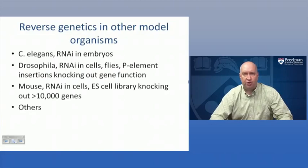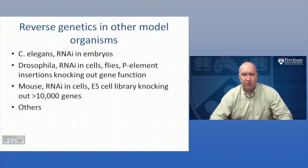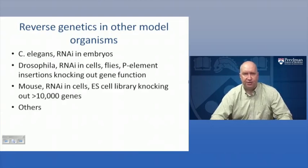As mentioned, there are reverse genetics methods in many other model organisms. In C. elegans, there's RNAi in embryos - you can simply feed RNAi reagents to C. elegans, they'll eat them, and it works. In Drosophila, there are RNAi methods in cells and in adult organisms, as well as P-element insertions knocking out gene function for a large chunk of the Drosophila genome. In mice, there are RNAi in cells and an ES cell library knocking out more than 10,000 genes from the COMP project. Many other model organisms are rapidly expanding reverse genetics as a method for genome-wide gene functionalization studies.